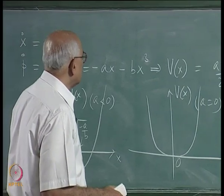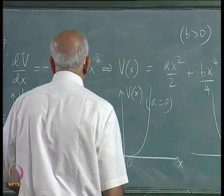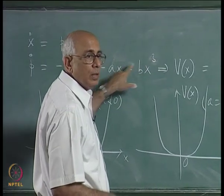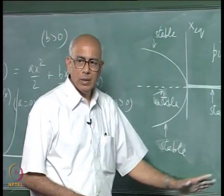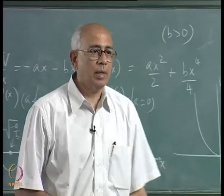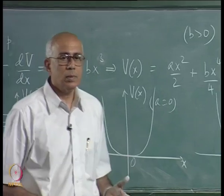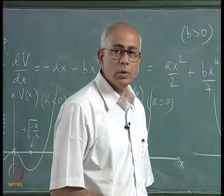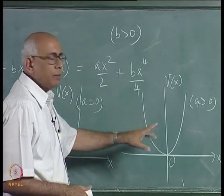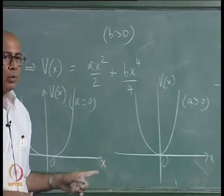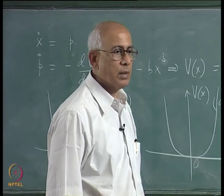Depending on which polynomial unfolding you consider, you get different bifurcations. Higher-degree terms such as x-to-the-fifth would give more complicated versions of these. These are the only three elementary bifurcations for continuous-time systems of co-dimension one. The classification of bifurcations in general higher-dimensional dynamical systems is non-trivial, especially as co-dimension increases beyond two or three, though much work has been done along these lines.